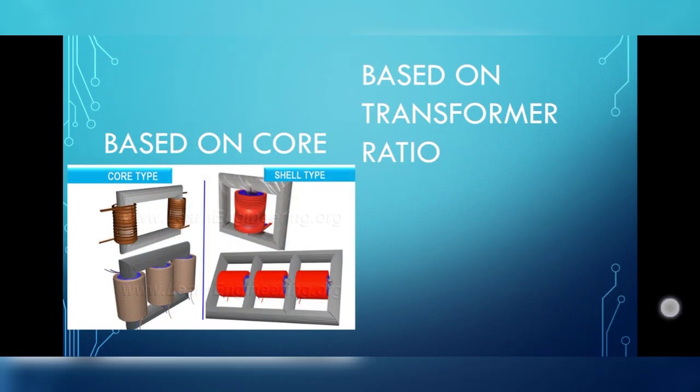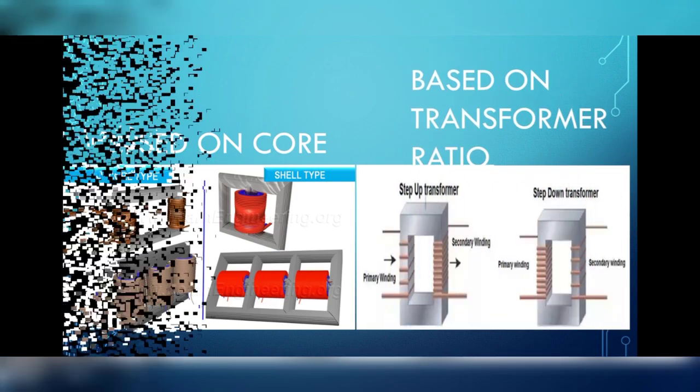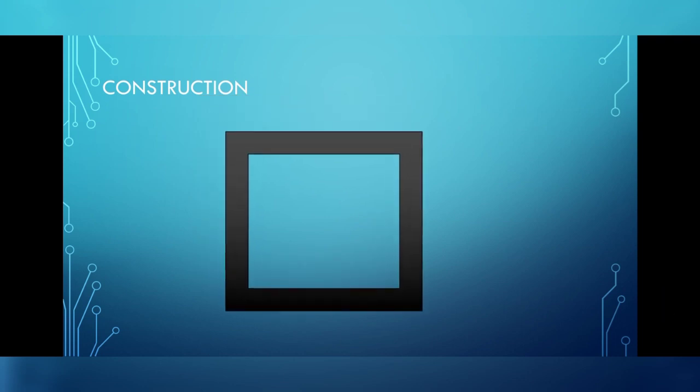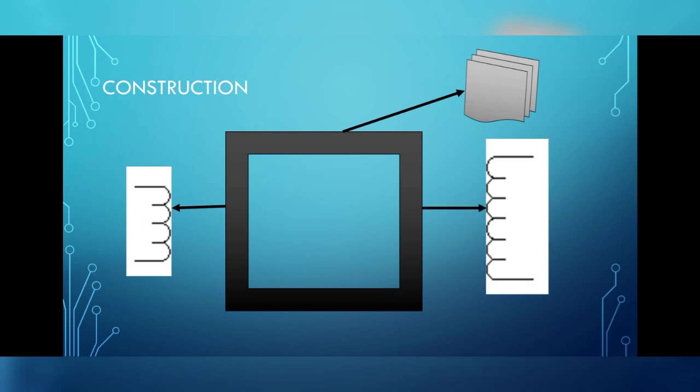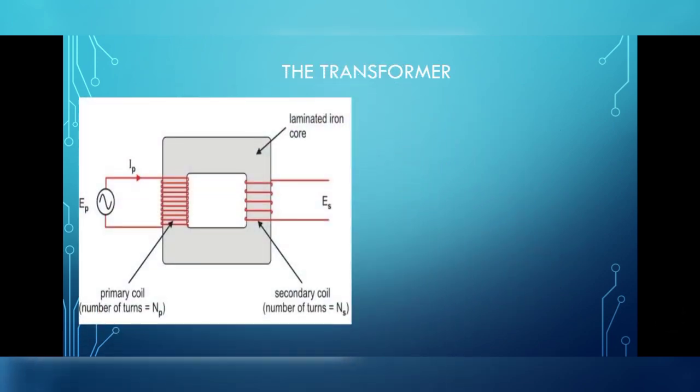Here is the model for transformers based on the core and transformer ratio. Now let us see the construction of a transformer. A large number of iron sheets stacked together to form a laminated iron core. The primary coil is wound on one limb of the transformer, and a secondary coil is placed opposite to the primary coil forming a secondary winding, or it can be placed together, that is it can be wound together on the same limb. Here are the pictures showing different constructions of the transformer.